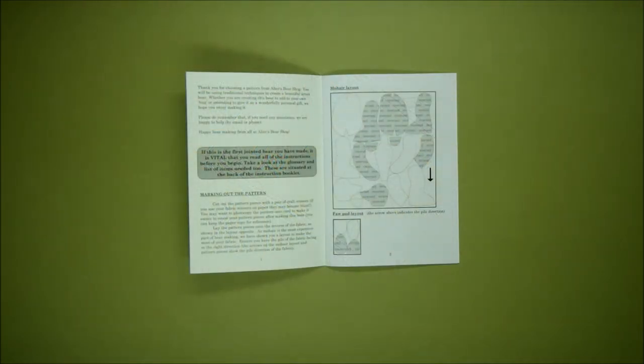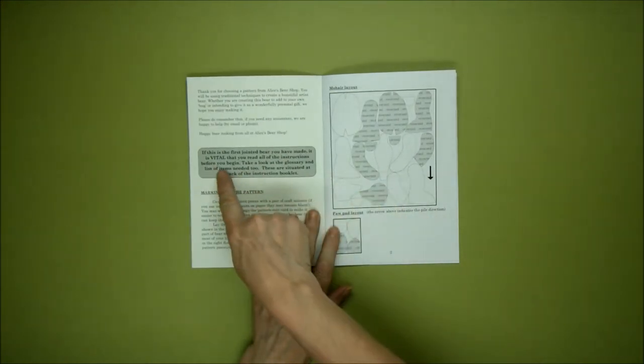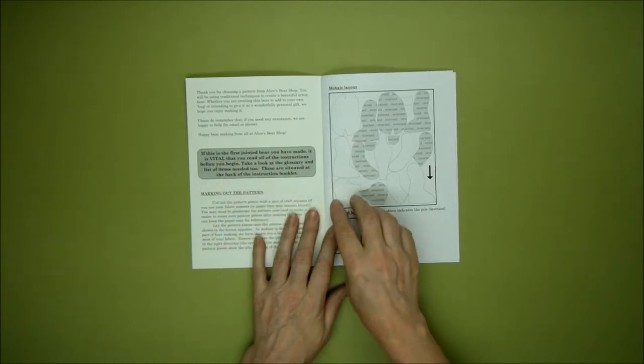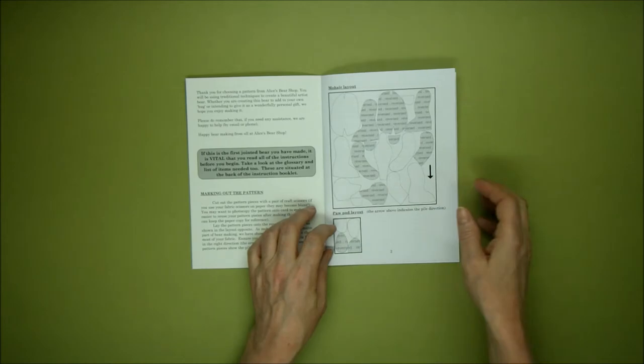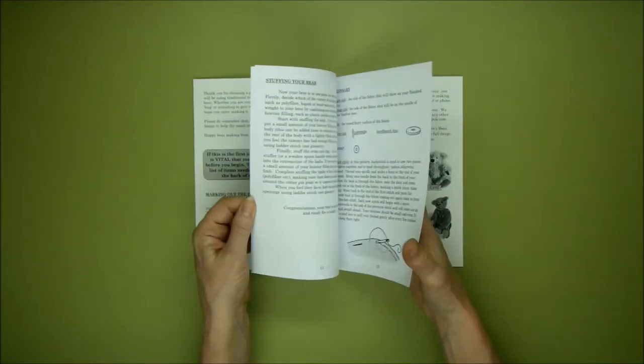Just like putting together an IKEA wardrobe, it's worth reading the instructions first. This section here says that if this is the first jointed bear you've ever made, it is vital that you read these instructions first. It also encourages you to take a look at the glossary if you've not made a bear before.